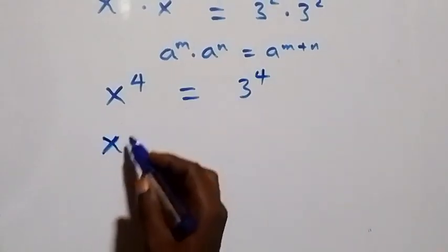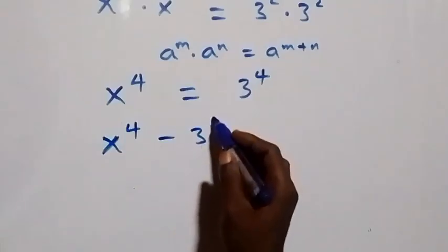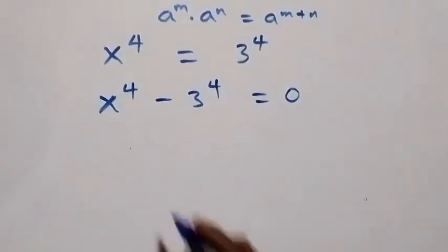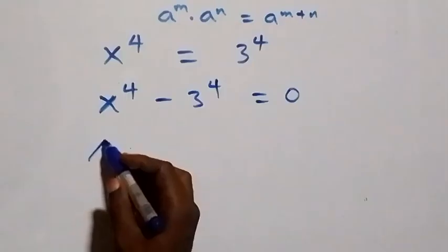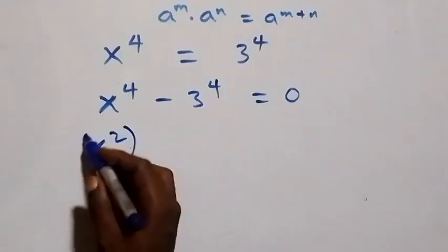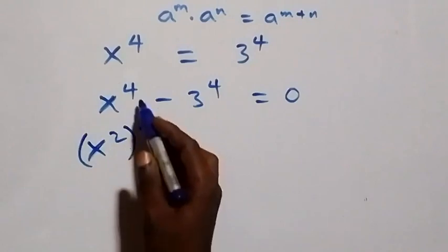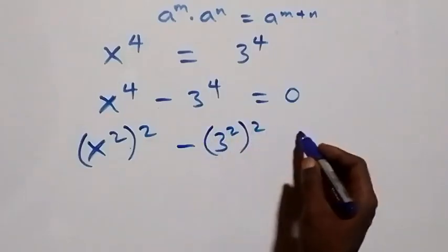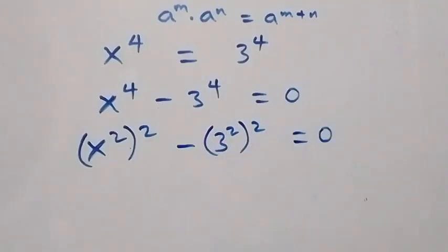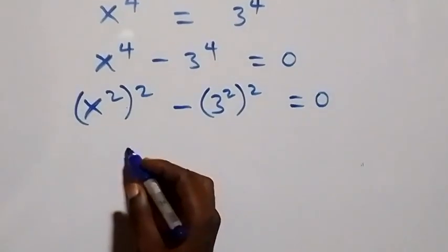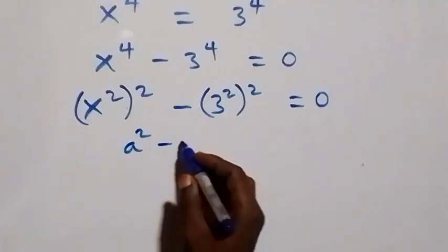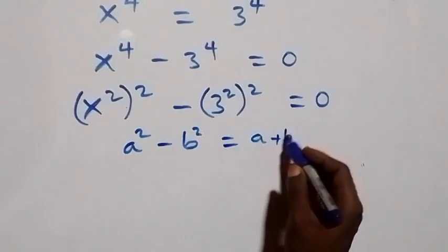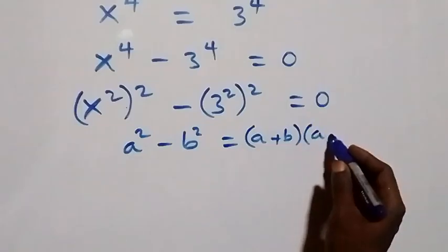Next, take three raised to power four to the left hand side, then we have x raised to power four minus three raised to power four equals zero. This can be written as x squared, then squared, minus three squared, then squared, equals zero. This follows from a squared minus b squared, which can be written as a plus b multiplied by a minus b.